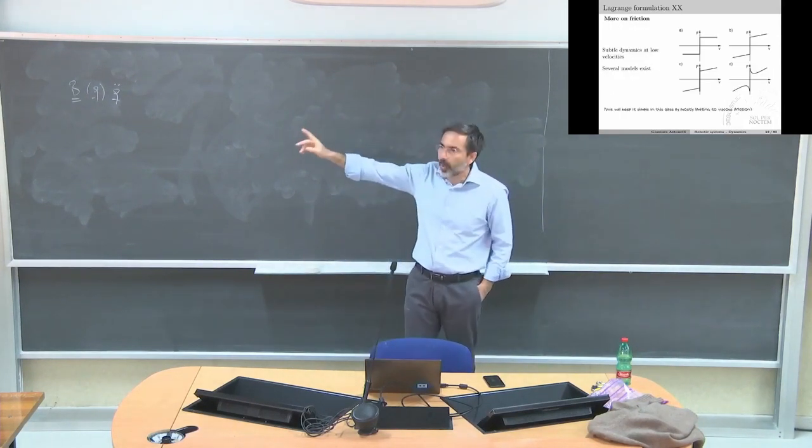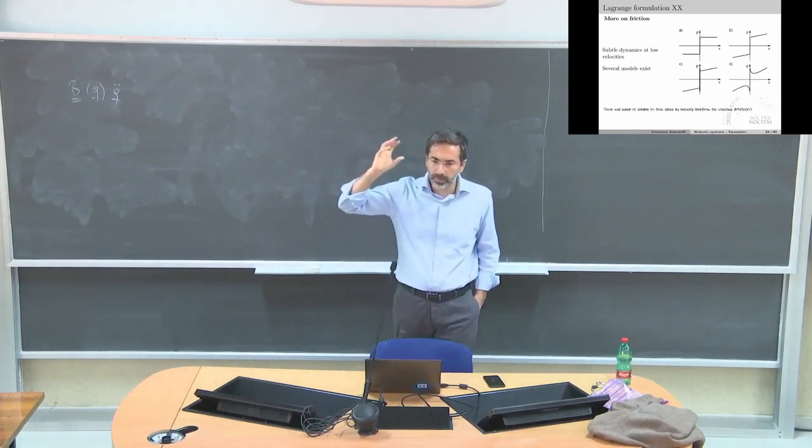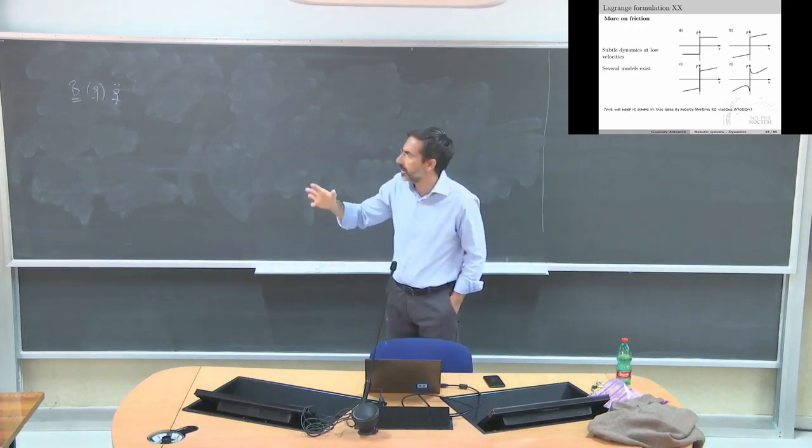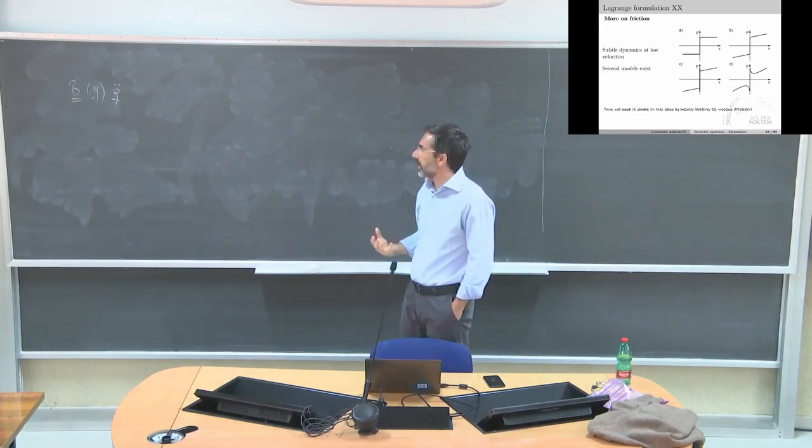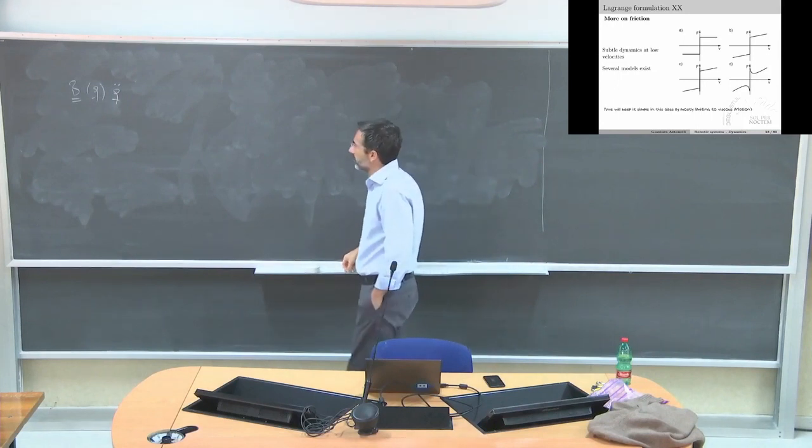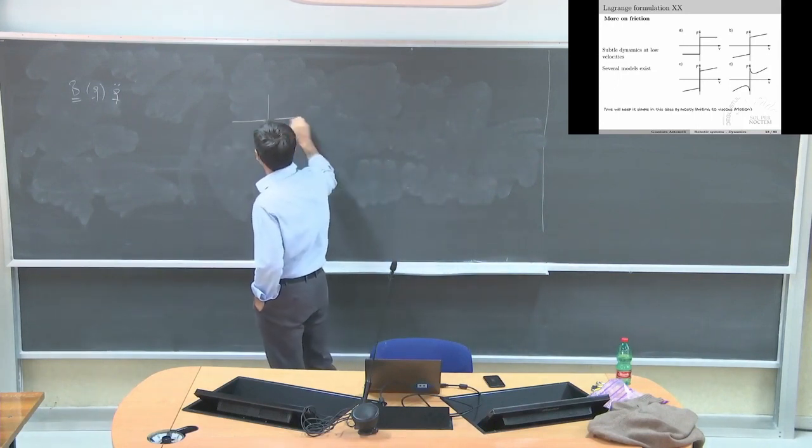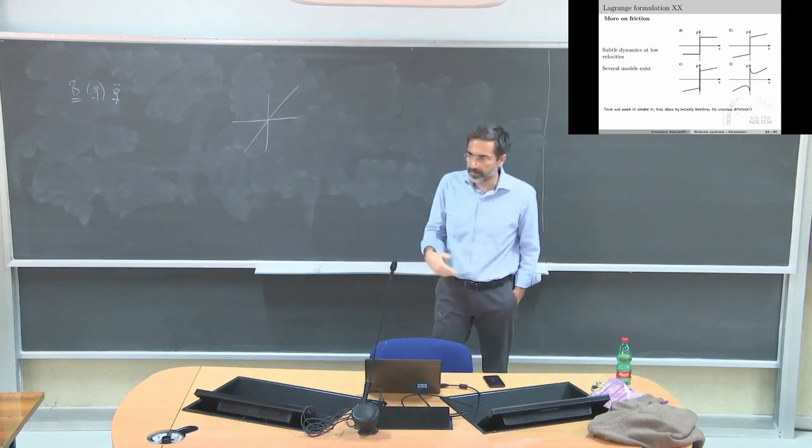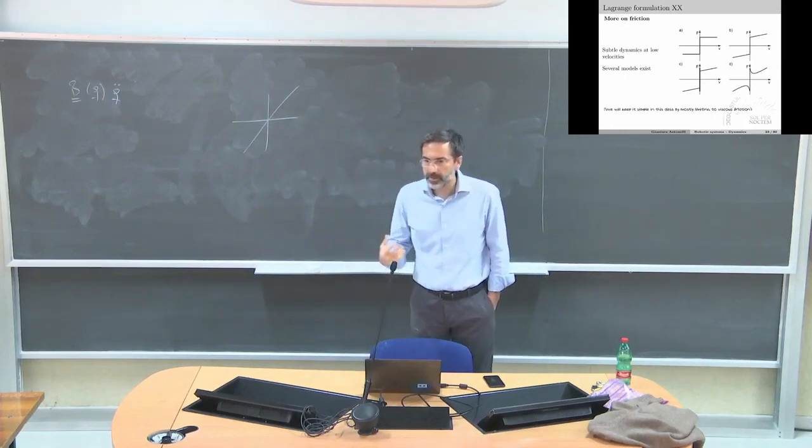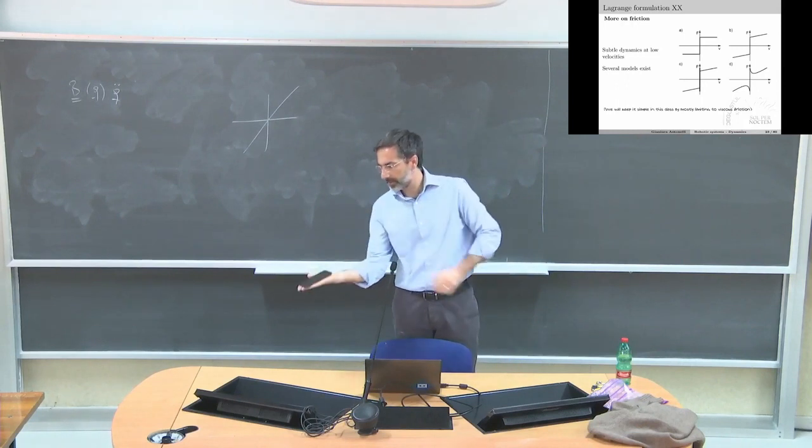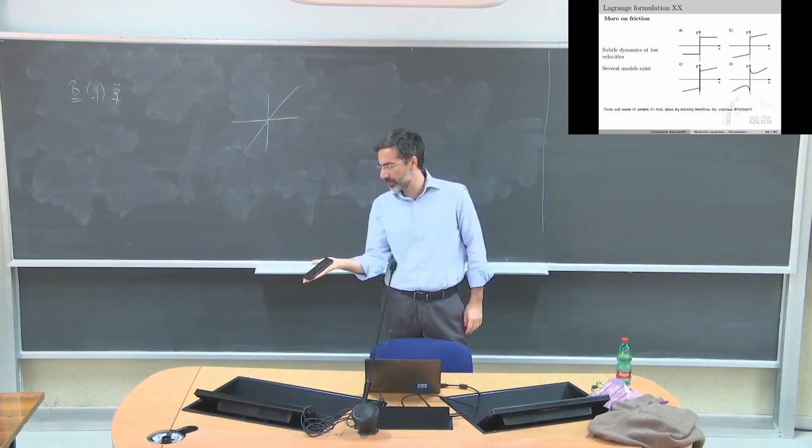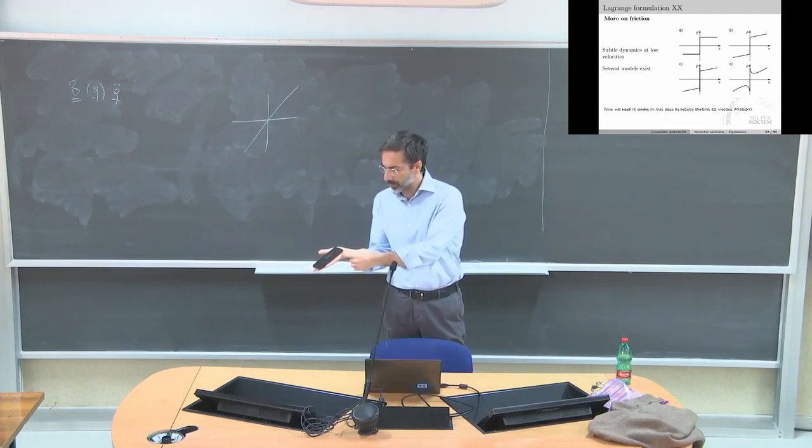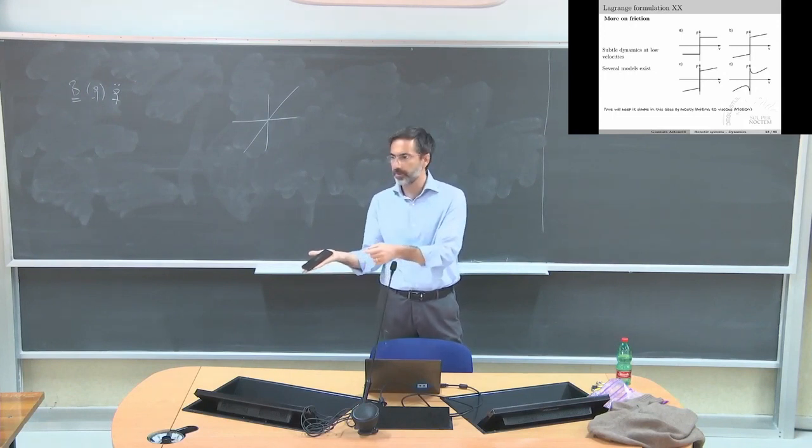Just one slide on the friction. I want you to remember that we are going to simplify a lot the friction. We are going to consider only the viscous friction. For us, the friction is a line passing through the origin. But this is not the reality. This is static friction. The reason why the mobile phone is not sliding down is that there is static friction.